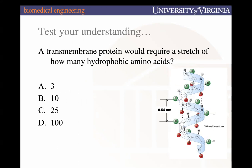For every turn of an alpha helix, that's about 0.5 nanometers in distance, with 3.6 amino acids per turn. A transmembrane protein would require a certain number of consecutive hydrophobic amino acids — knowing that the cell membrane is 4 nanometers thick. Take a moment to do a back-of-the-napkin calculation with your neighbors: how many consecutive hydrophobic amino acids would we need for a transmembrane protein?